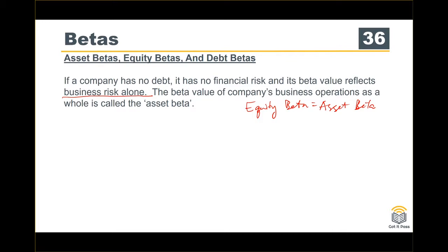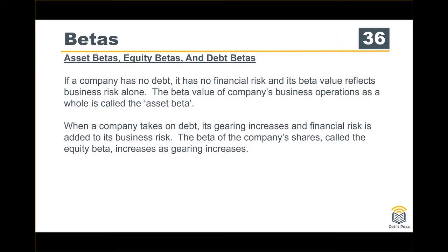If there's no debt, it shows the business operations only. When a company takes on debt, its gearing increases and financial risk is added on to the business risk. So it's not only business risk — it also has financial risk. The equity beta is therefore the sum of business risk and financial risk.